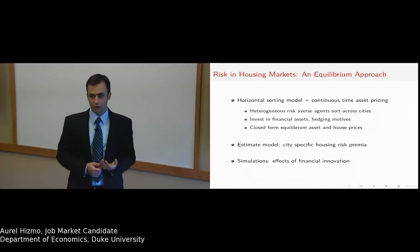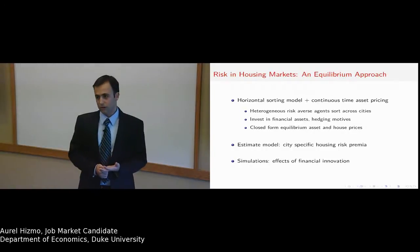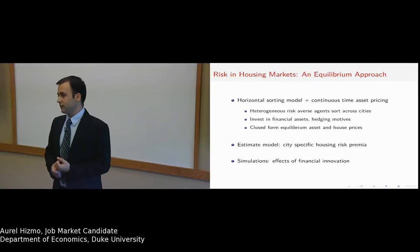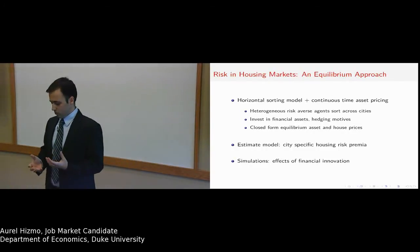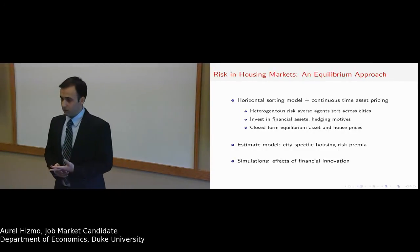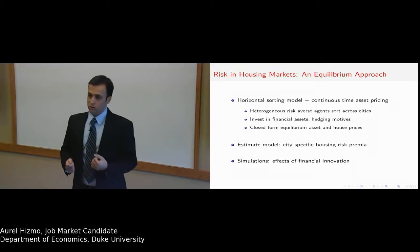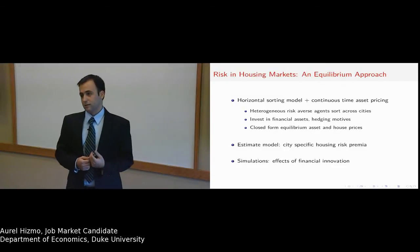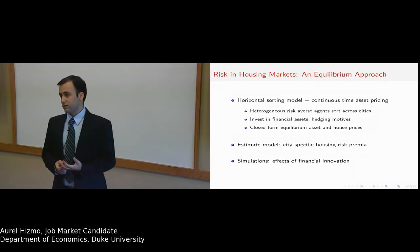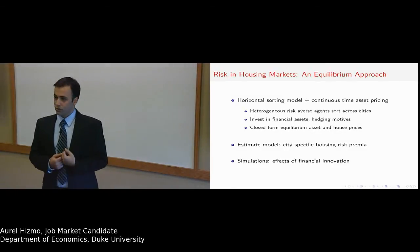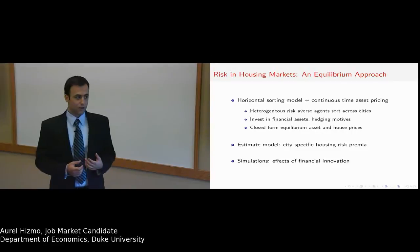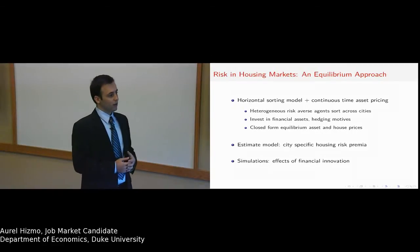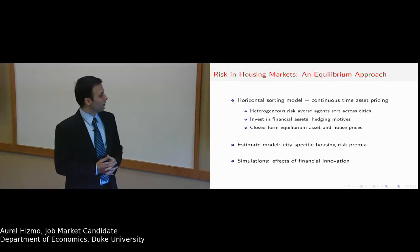For example, a worker in Detroit is overexposed to the auto industry risk, and wants to short the stocks of the auto industry in order to insure themselves against possible unemployment and loss in housing wealth.